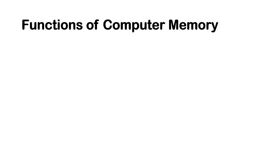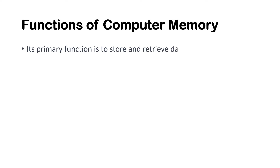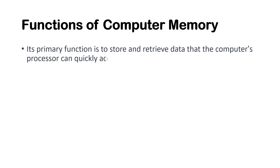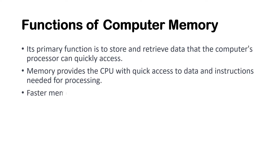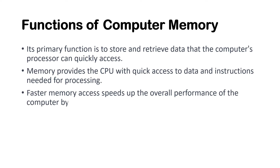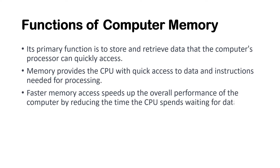What are the functions of computer memory? Its primary function is to store and retrieve data that the computer's processor can quickly access. Memory provides the CPU with quick access to data and instructions needed for processing. Faster memory access speeds up the overall performance of the computer by reducing the time the CPU spends waiting for data.